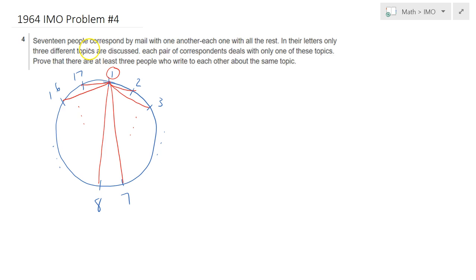In their letters only 3 different topics are discussed. So what it means is, each of these connections between person 1 and the others have 3 topics that are discussed. Namely the topics A, B, and C. In this picture I haven't shown it, but each person is corresponding with the remaining 16 people.